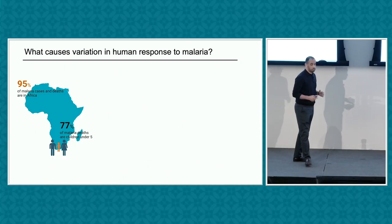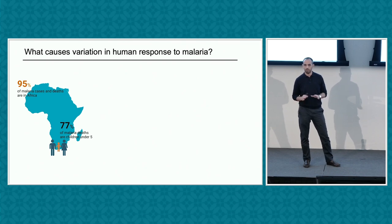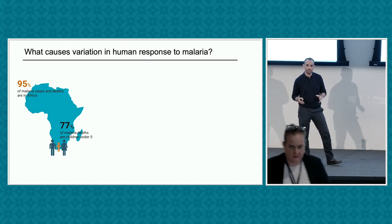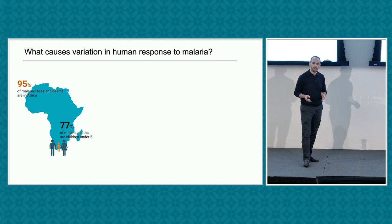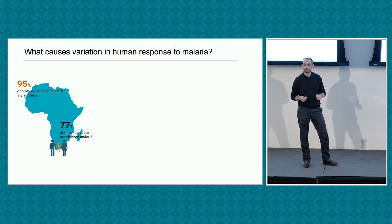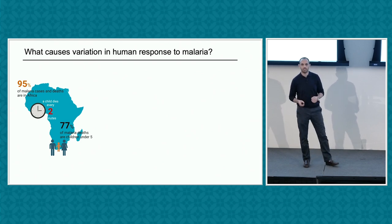Malaria is a very devastating disease, one of the oldest diseases that mankind has ever known. 95% of malaria cases and death-related cases are concentrated in Africa, while 77% of these cases are in children below the age of five. And every two minutes, a child dies of malaria. That's how devastating this disease is.